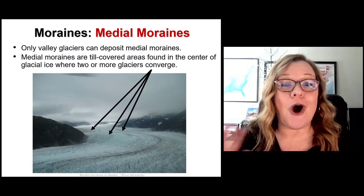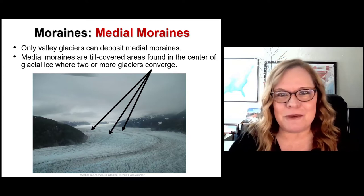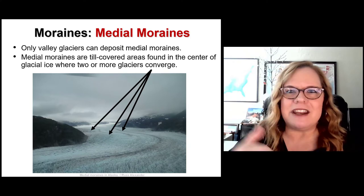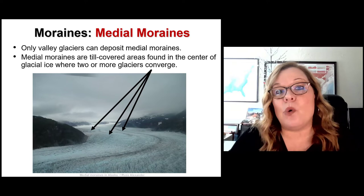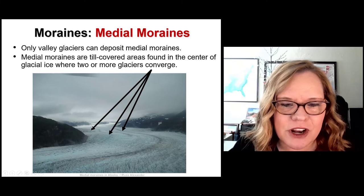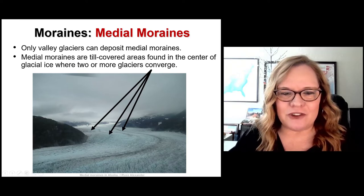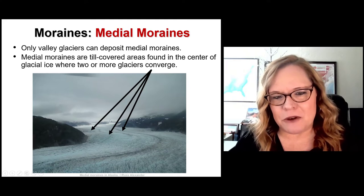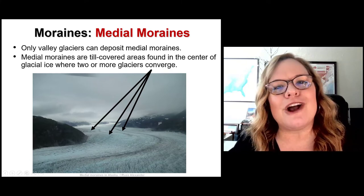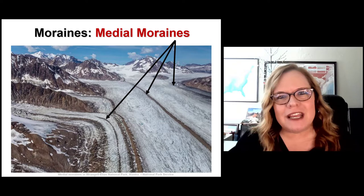Another type of moraine unique only to valley glaciers is the medial moraine — my personal favorite. When two or more glaciers come out of a glaciated mountainous region and their lateral moraines join, they make dark stripes down the middle of the glacier. It's like an interchange system of highways for all these different glaciers — one from this mountain, one from that mountain — and where they join up, their lateral moraines become medial moraines. They're really awesome looking.